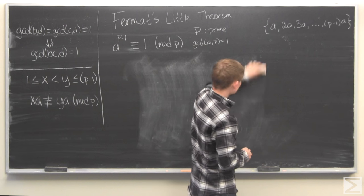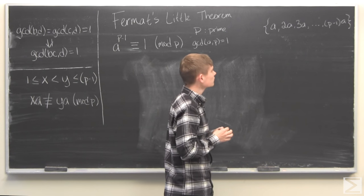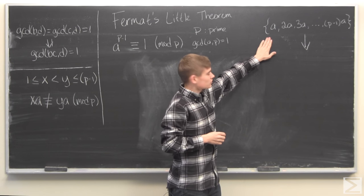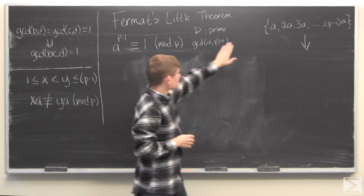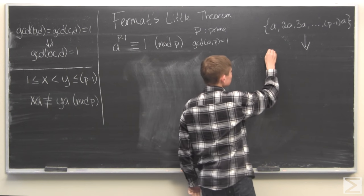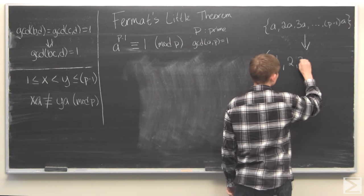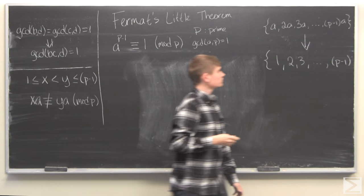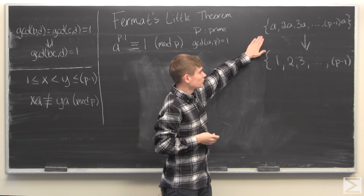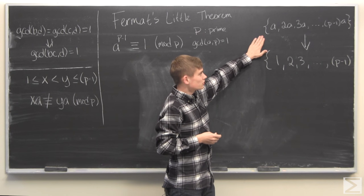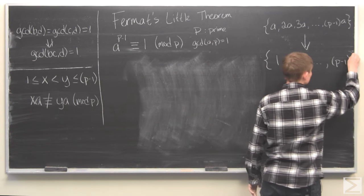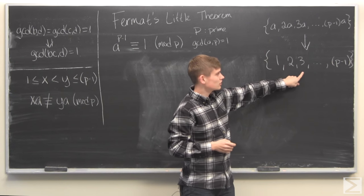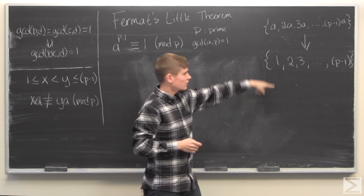Going back to these factors: what we've shown is that if you take these multiples of a from 1 to p minus 1 and reduce them modulo p, you must get back the set of natural numbers from 1 to p minus 1. Since none of them are congruent to each other and none are congruent to 0, there are p minus 1 spots and p minus 1 numbers, so they may not appear in order, but you will get exactly those numbers.